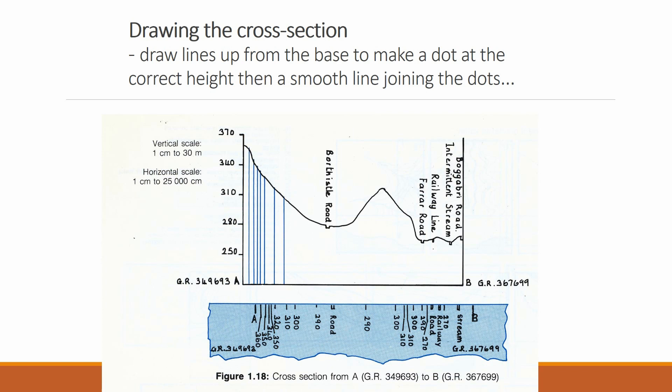Now, taking the piece of paper that we made from the cross section or drawing the cross section from the map and the elevation, we can now draw lines up from the base to make the dot at the correct height. Then we smooth the line joining the dots.